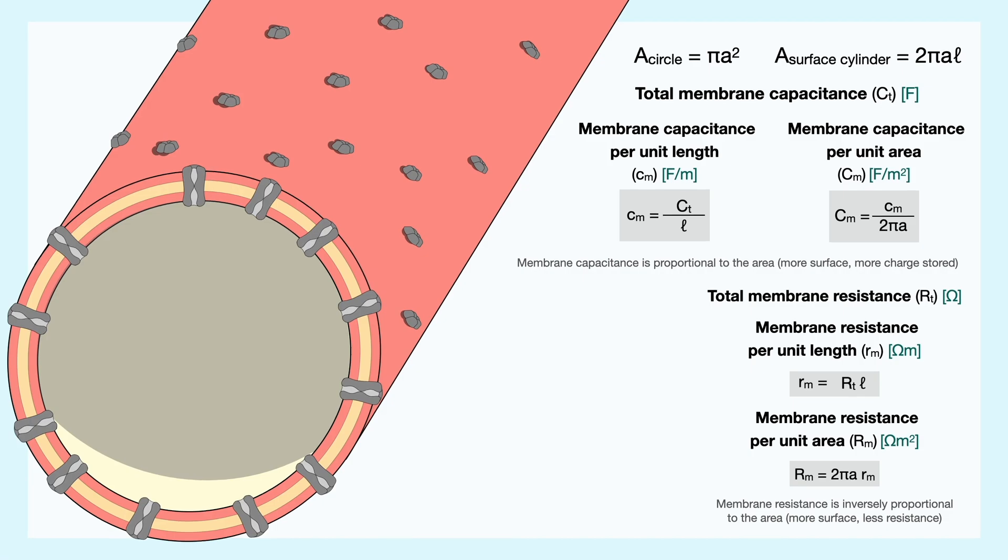One final property we now have to consider is the resistance due to the cytoplasm as the charges move inside the cylinder. This resistance is named the axial resistance and is noted capital RA. Similar to what happens in an electrical wire, we can define this internal resistance as the product of the resistivity of the cytoplasm times the length divided by the area of a cross-section of a cylinder.